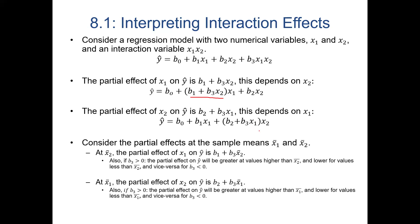Think of it in three dimensions: x1 and x2 as two dimensions and y as the third. Interpreting this is like taking slices — you pick an x1 value and that's your slice, then you observe the partial effect of the second predictor on the response at that slice. In practice, people often use the average value from the sample data. They plug in the mean of one predictor and calculate the partial effect of the other predictor at that mean.